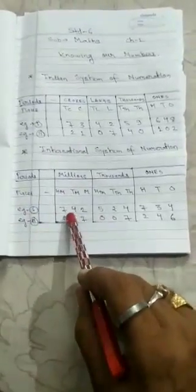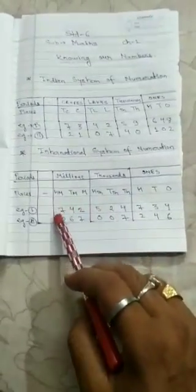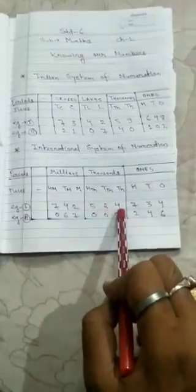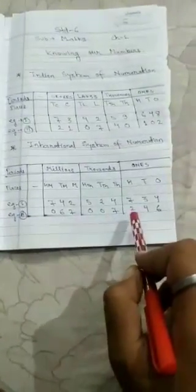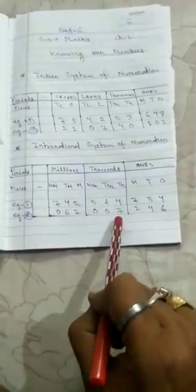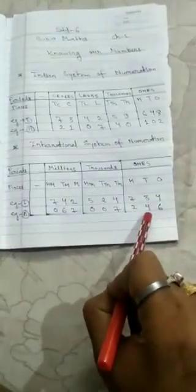For example, number 1: 7,4,2,5,2,4,7,3,4. In the international system, numbers are read in groups of three. So this reads as: 742 millions, 524 thousands, and 734. Similarly, example 2: 0,6,7,0,0,7,2,4,6 is read as 67 million, 7 thousand, 246.